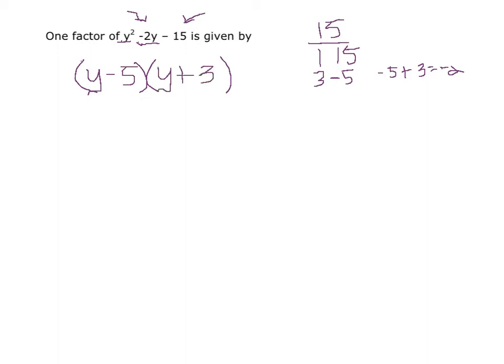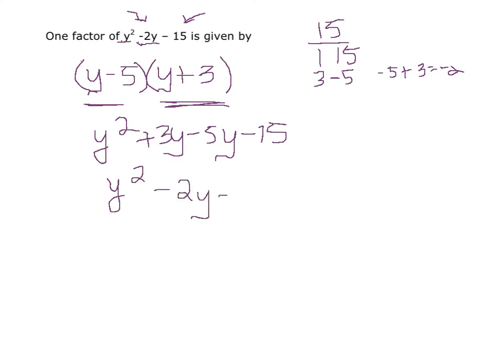And I can check this by using FOIL or distribution. I would have y squared plus 3y minus 5y minus 15, which indeed matches our given expression of y squared minus 2y minus 15.